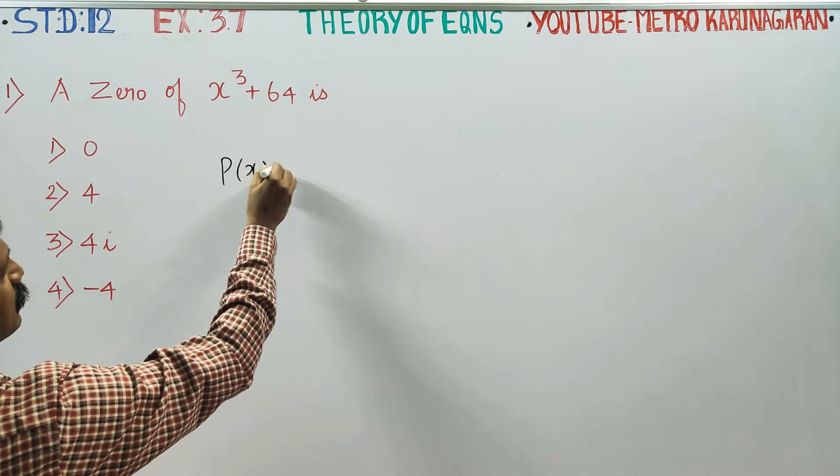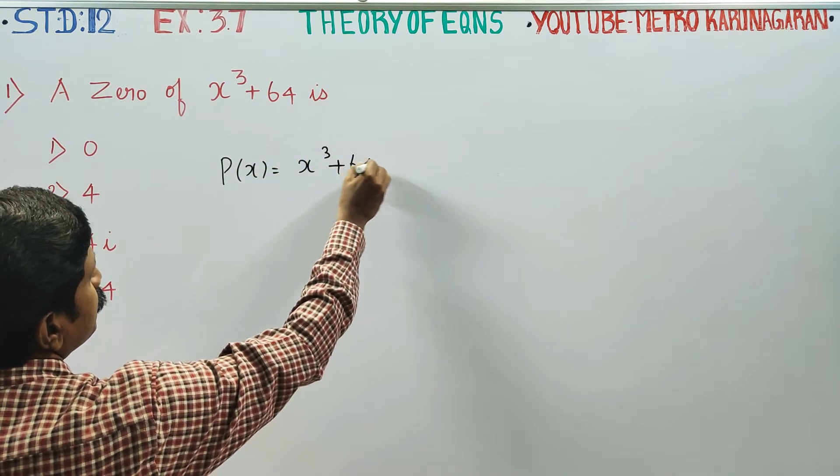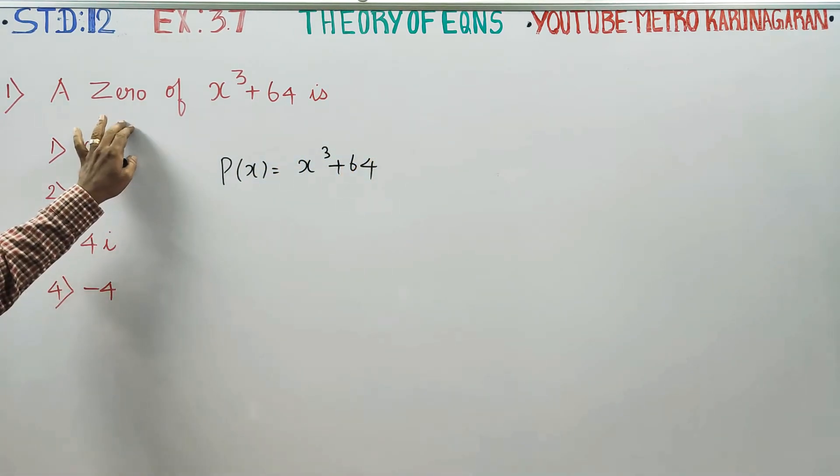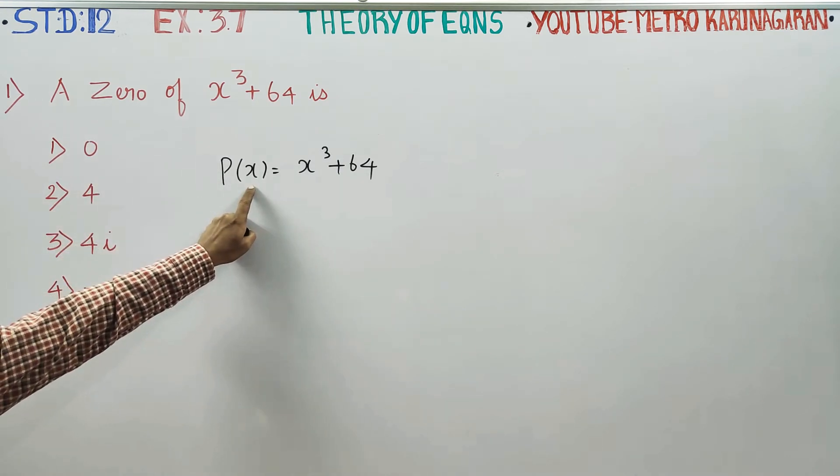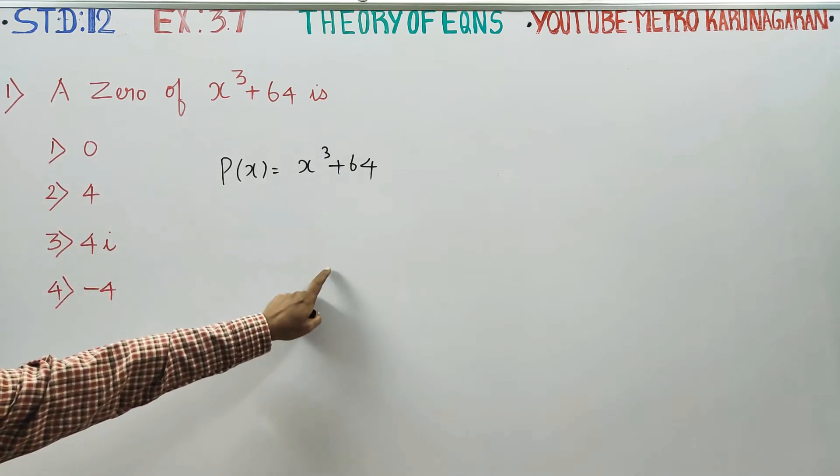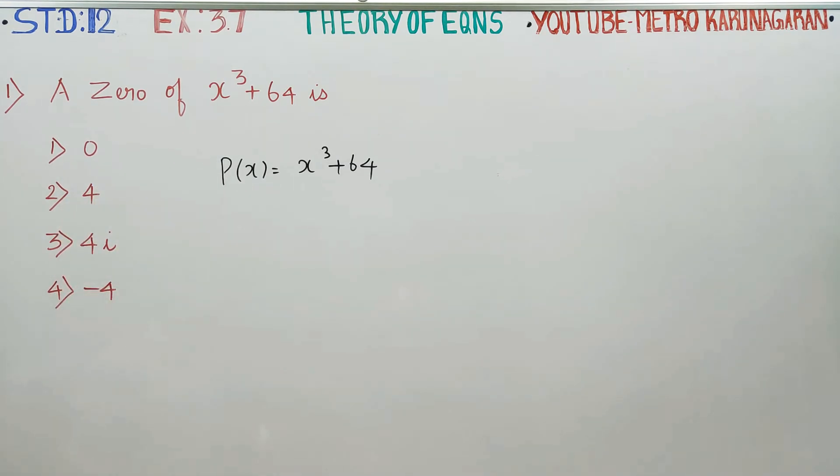P(x) = x³ + 64. Zero means if you substitute a value for x, the answer must be 0. It is called a zero of this polynomial.